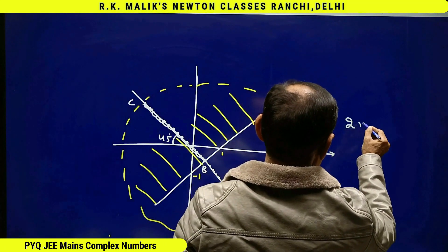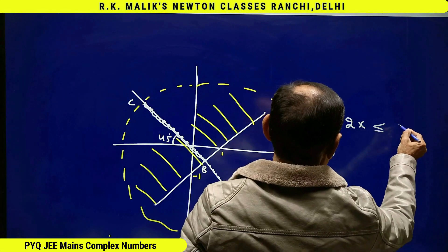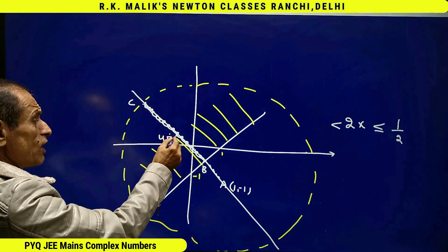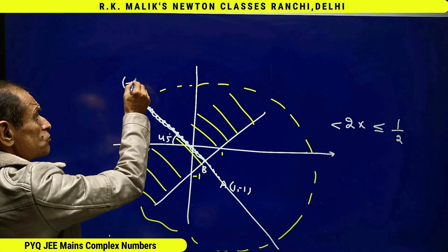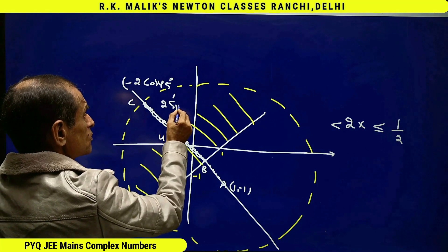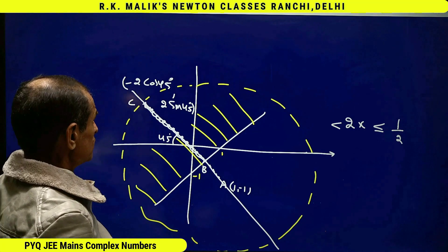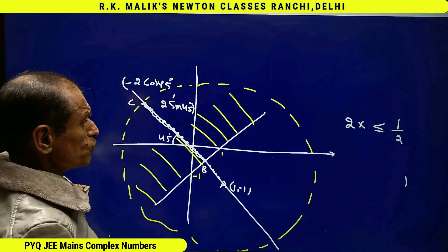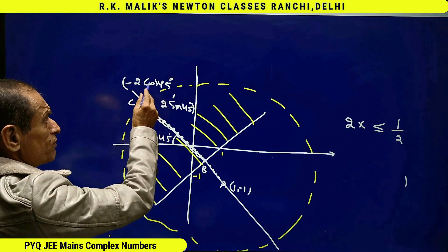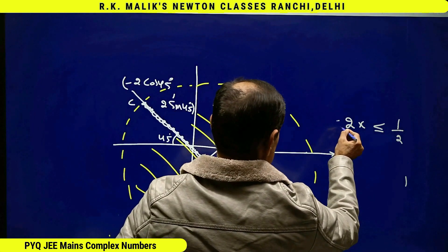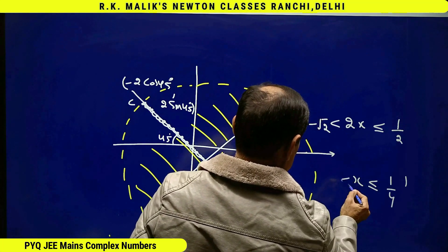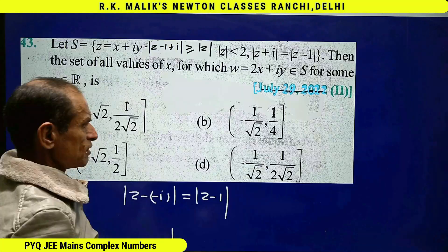Hence, 2x is less than or equal to 1/2. This point on the circle at angle 45 degrees becomes minus 2 cos 45 and 2 sin 45, so the x-coordinate at that point is minus 2 cos 45 equals minus root 2. Therefore, x lies between minus 1 over root 2 and 1/4, and the correct answer is option B.